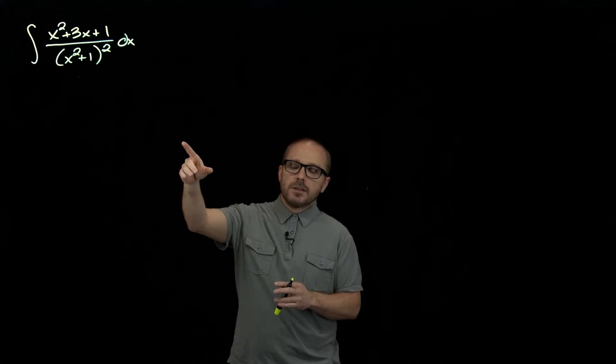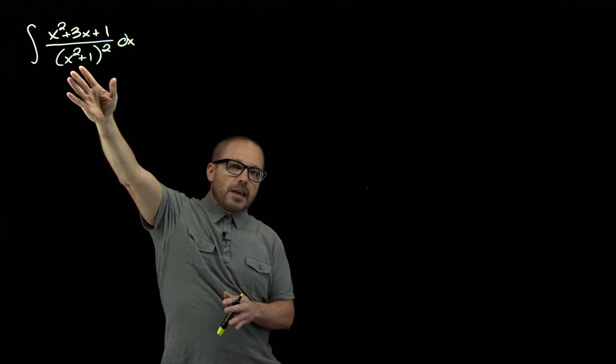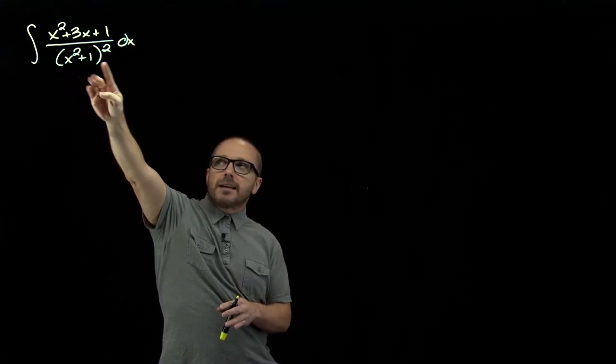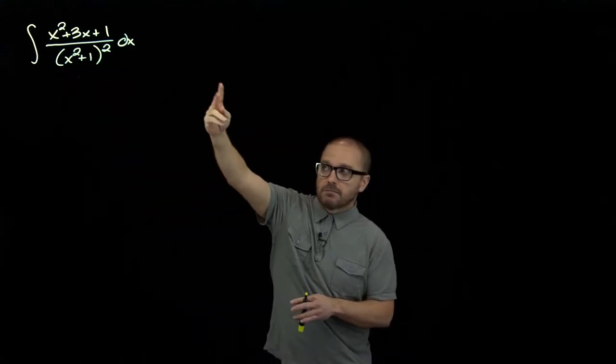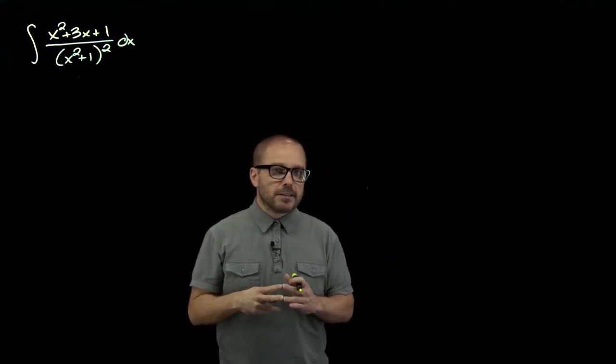Here we have a situation where the denominator is factored for us already. We see we have a factor there that can't be reduced any further, it's quadratic, but it's also being repeated, it's to the second power. So what we'll do is combine the two ideas we've already seen.